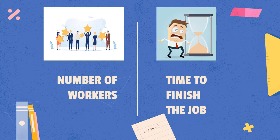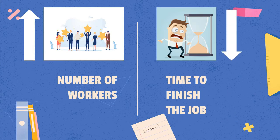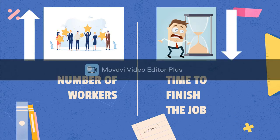For example, the number of workers. If many people are working on a particular job, the time used to finish that job is shorter. On the other hand, if there are fewer workers, the time used to finish the job is longer. So, this is an example of inverse variation.